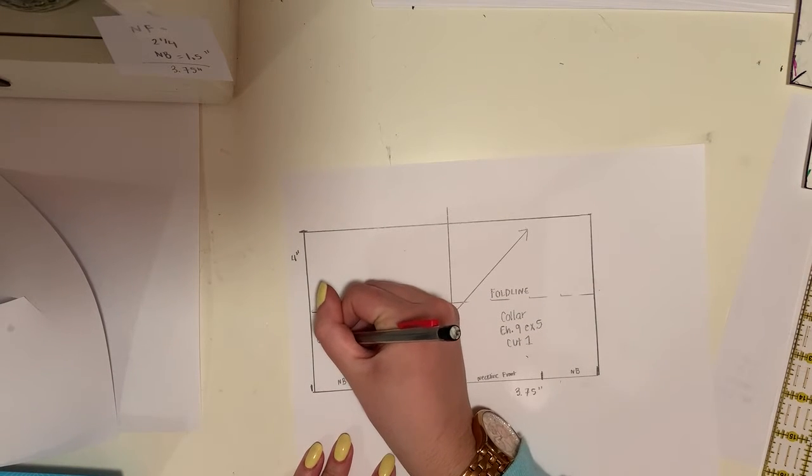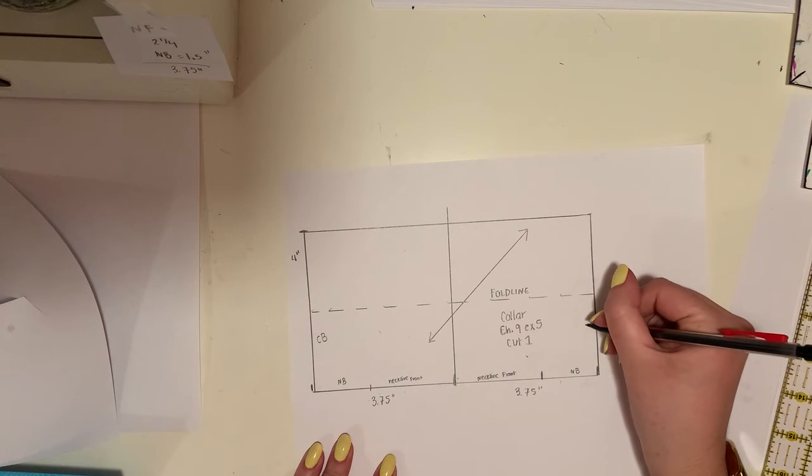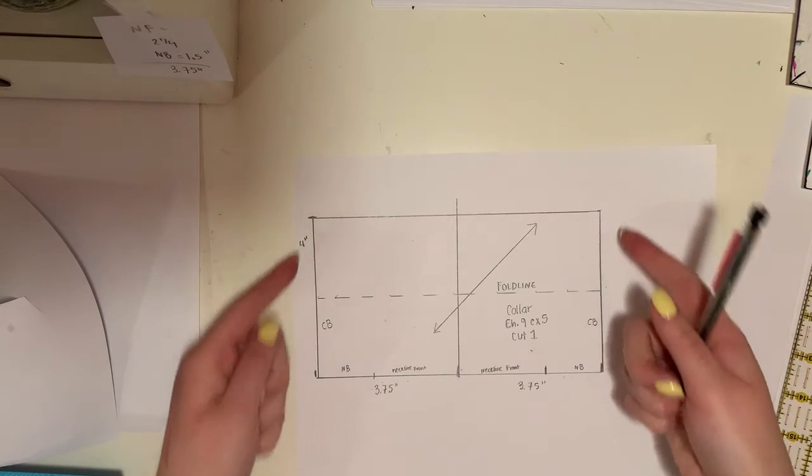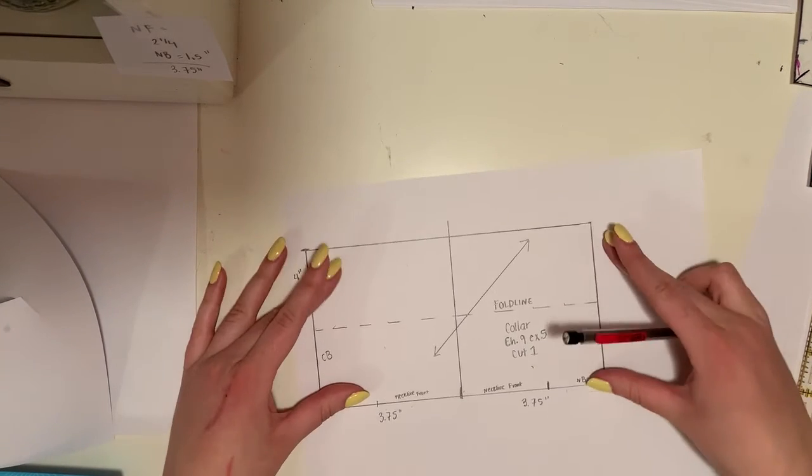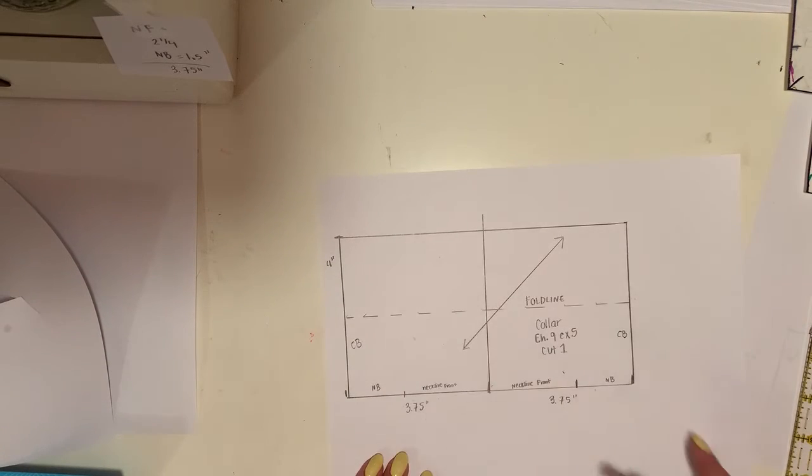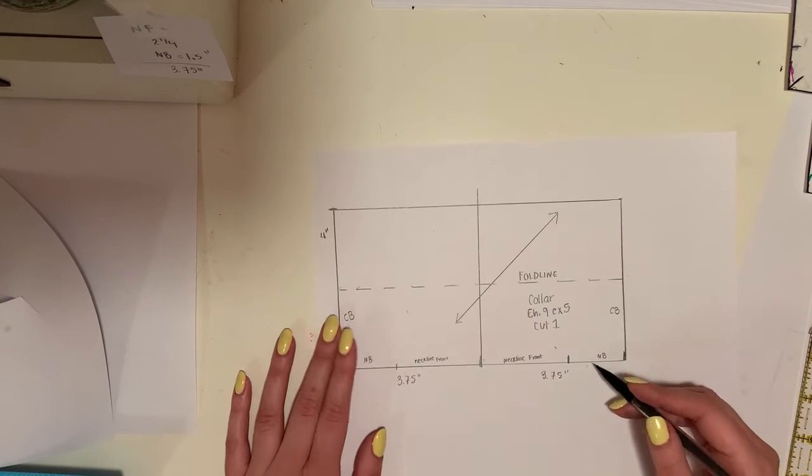This is our center back, and this is also our center back, because when you go to sew it, you're actually going to wrap it around and fold it and sew up this. So yeah, this is cut one because of the fold line. You can go ahead and cut it out and add it to an additional sheet of paper.